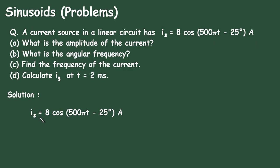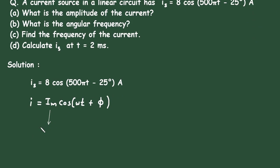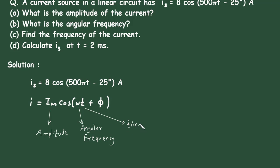Now if we compare this with the standard equation, the standard equation is I = Im cos(ωt + φ). Here Im represents the amplitude or maximum current, ω represents the angular frequency, t is the time in seconds, and φ represents the phase angle.